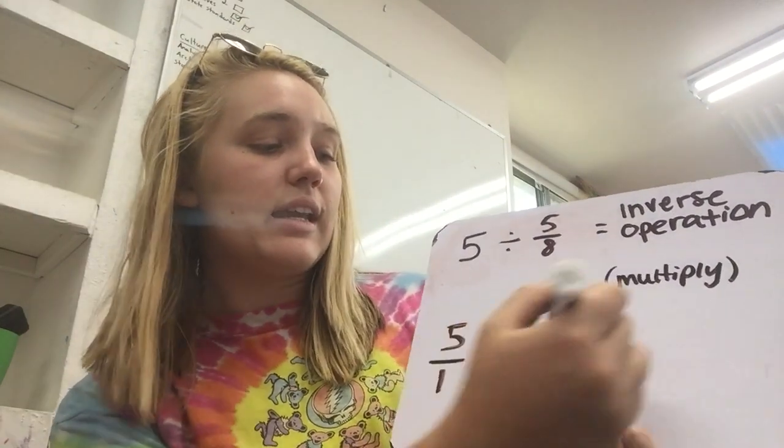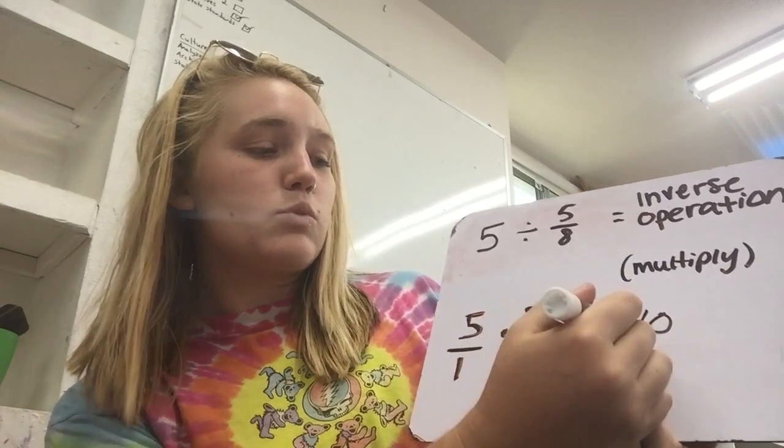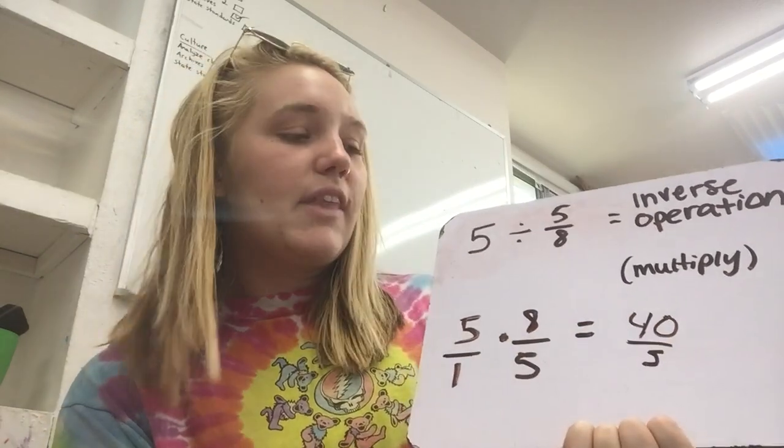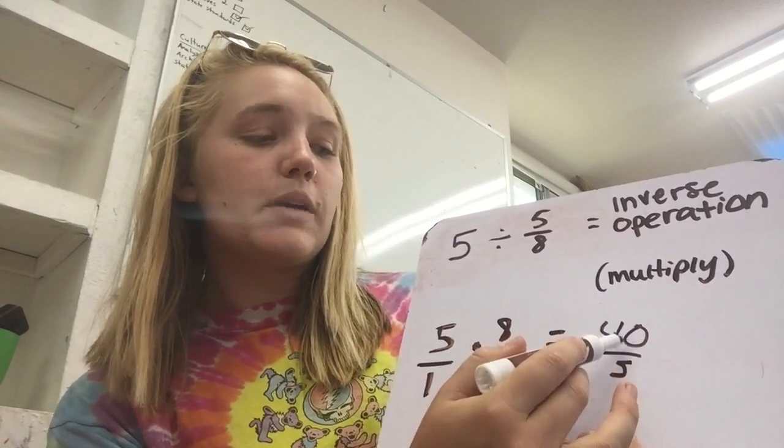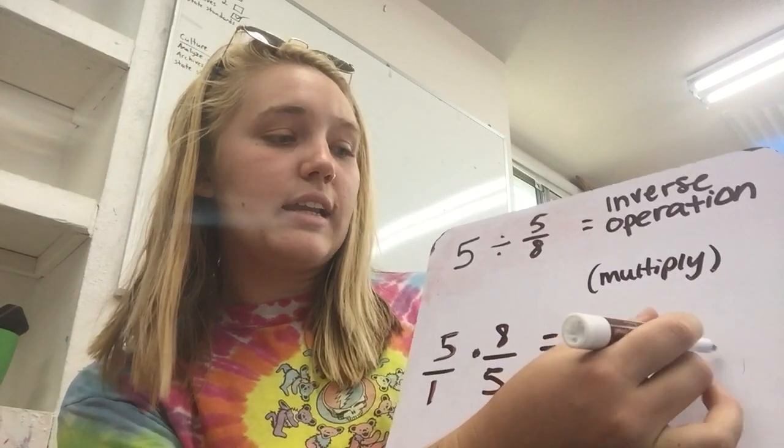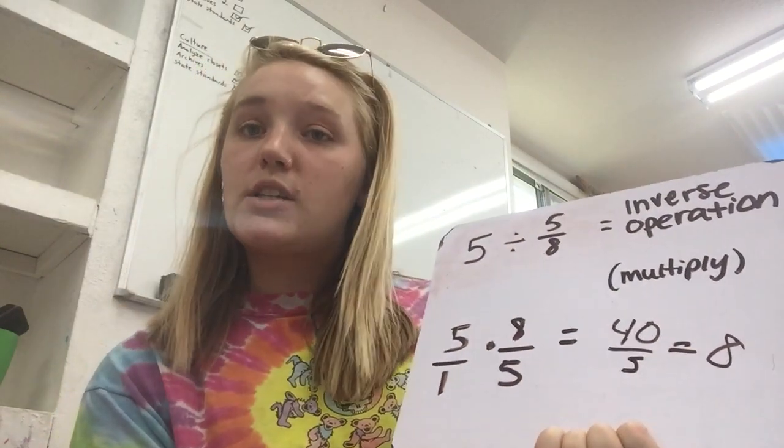So, five times eight is forty, and then five times one is five. Then all I have to do is divide forty by five, which is eight. So, she can make eight purses with the fabric.